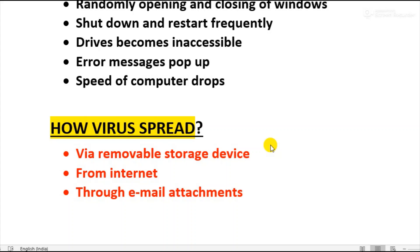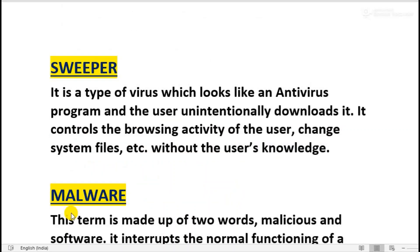So these are the three ways by which a virus spreads from one system to another. I have already mentioned that there are many malicious programs harmful for our computer system. The meaning of malicious program is software which is harmful for the computer system. One of the malicious software is the computer virus, which we have already discussed. Now I am going to explain the other malicious software or programs.